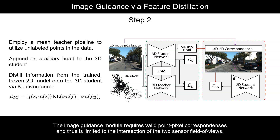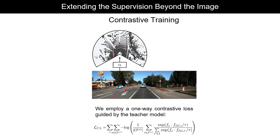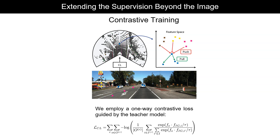To extend the supervision to points outside of the image, we propose using a one-way contrastive loss guided by the teacher model, allowing points that fall within the image to guide points that fall outside. As illustrated, the loss extension aims to apply a pull force to all points towards pixels of the same category, while also applying a push to all points away from pixels of a different class. We therefore align the features of points outside of the image with the features of the 2D image guidance network.